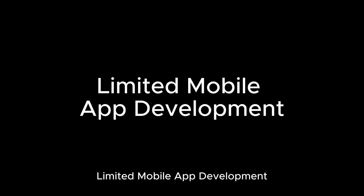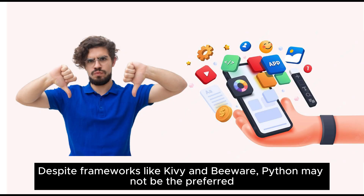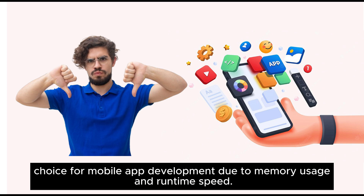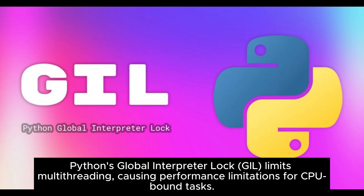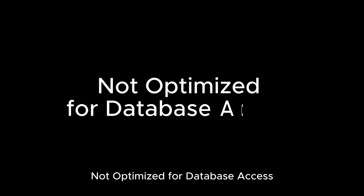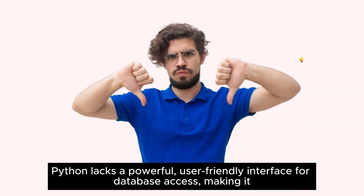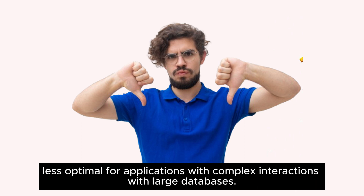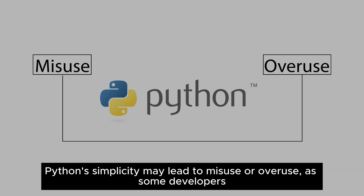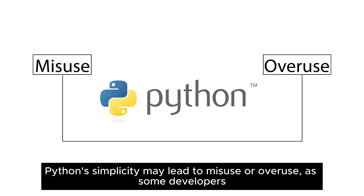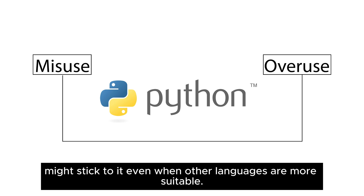Despite frameworks like Kivy and BeeWare, Python may not be the preferred choice for mobile app development due to memory usage and runtime speed. Python's Global Interpreter Lock (GIL) limits multi-threading, causing performance limitations for CPU-bound tasks. Python also lacks a powerful, user-friendly interface for database access, making it less optimal for applications with complex interactions with large databases. Finally, Python's simplicity may lead to misuse or overuse, as some developers might stick to it even when other languages are more suitable.